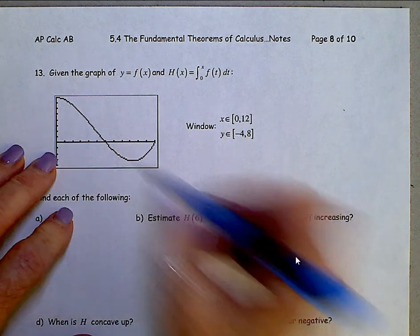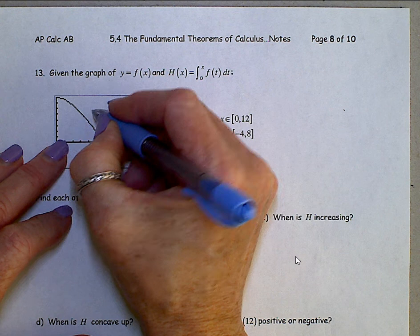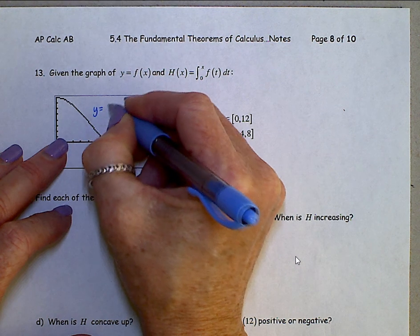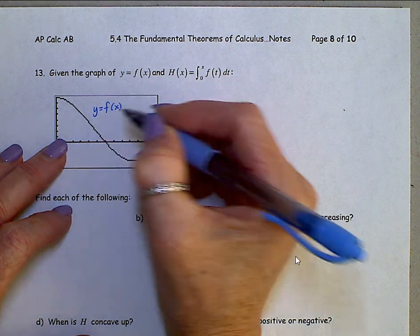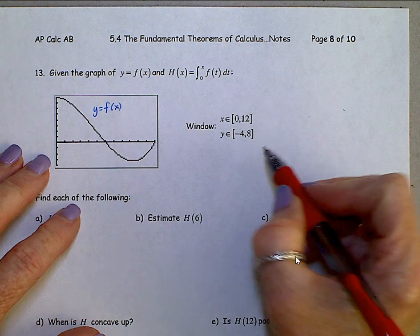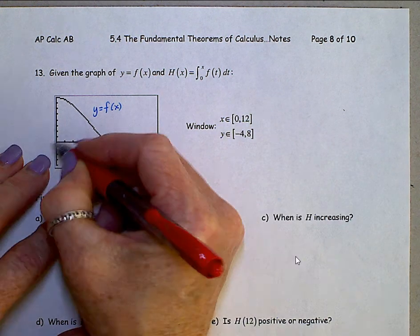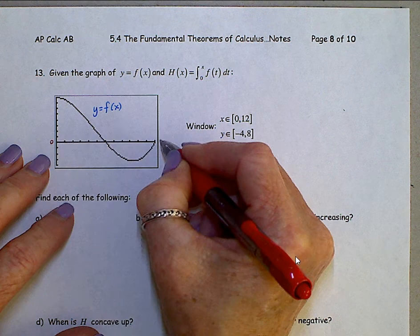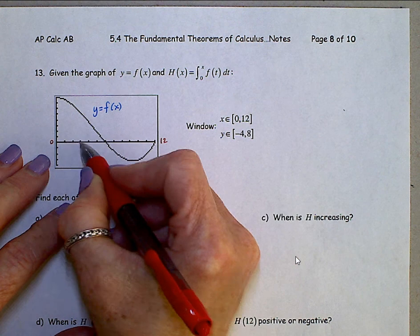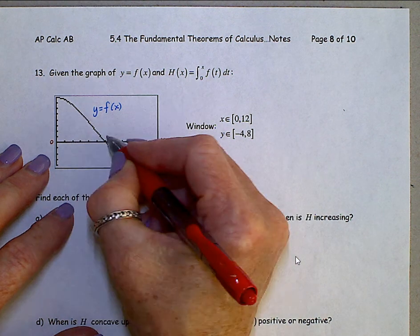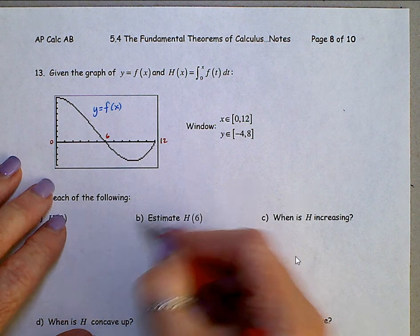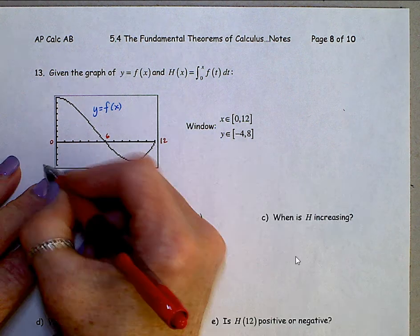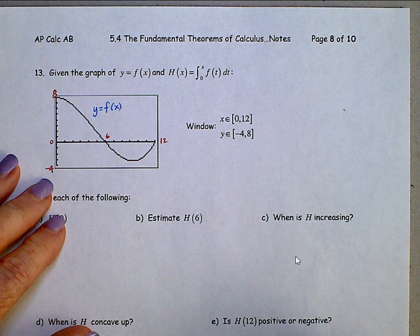The first thing I want you to do is label this function. This is y equals f of x. And we see our window over here set at x between 0 and 12, counting off by ones. So that puts that 6 right there. Y values between negative 4 and 8 up here.